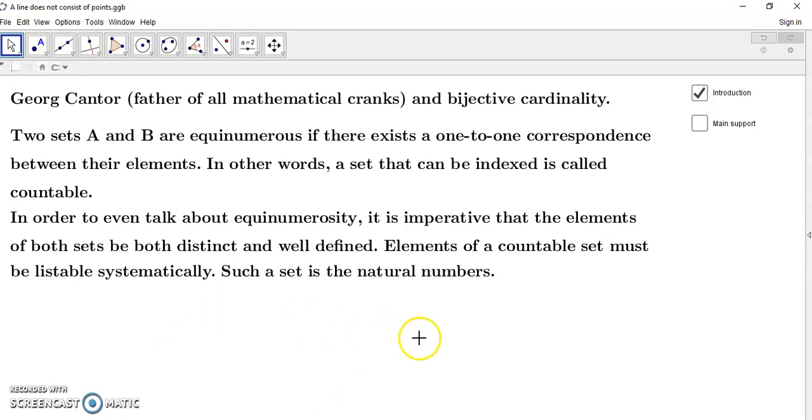In order to even begin to talk about equinumerosity, it is imperative that the elements of both sets be both distinct, which means they're going to be well defined—in other words, all of them have a unique name and are easy to identify. So elements of a countable set must be listable systematically. That also means that in order for a set to be called countable, it must be possible to systematically name all of its elements.